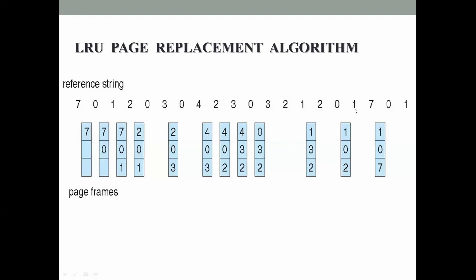Next page reference is 1, which is already in memory - no page fault. Next page reference is 7: not in memory, generating a page fault. We must replace either 1, 0, or 2. Checking past references: 1, 0, 2 - two occurs last, meaning two has not been used for the longest period of time. So 2 is replaced with 7. Next, 0 is already in memory - no page fault. Next, 1 is also in memory - no page fault.